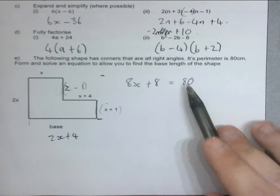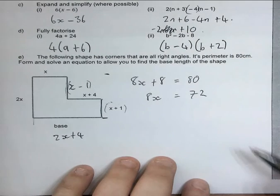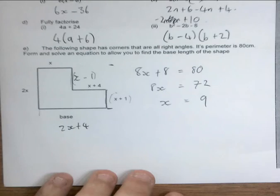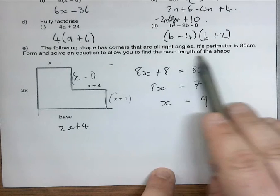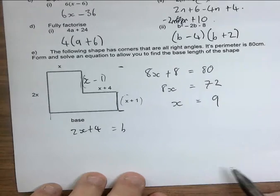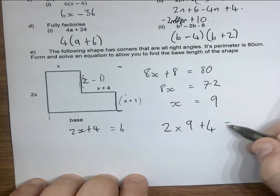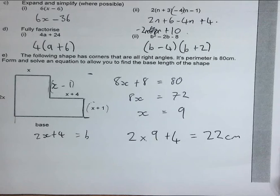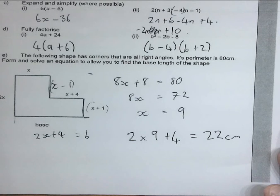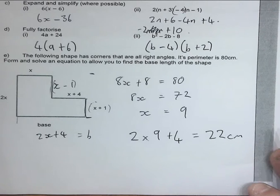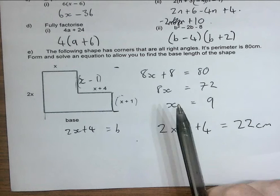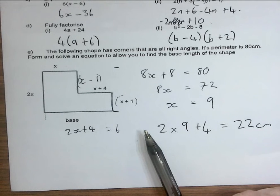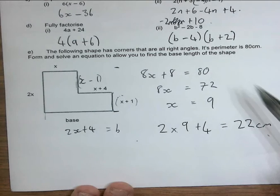The perimeter equals 80 centimeters. So if you got up to the expression but made a mistake, put this under 'solving equations.' The equation is 8x = 72, giving x = 9. But we're not done — we have to find the length of the base. If x = 9, the base is 2x + 4 = 2(9) + 4 = 22 centimeters.